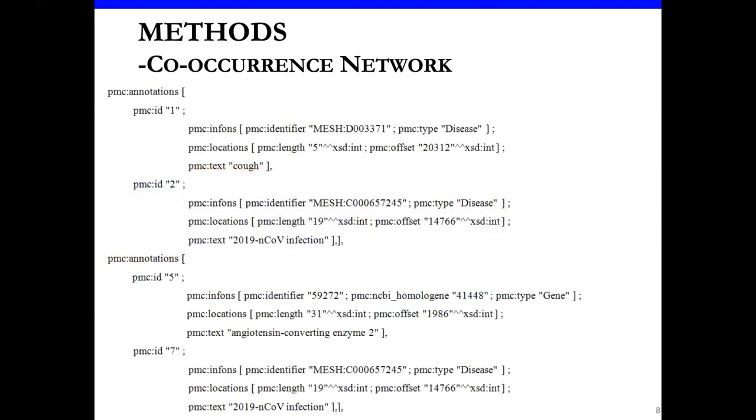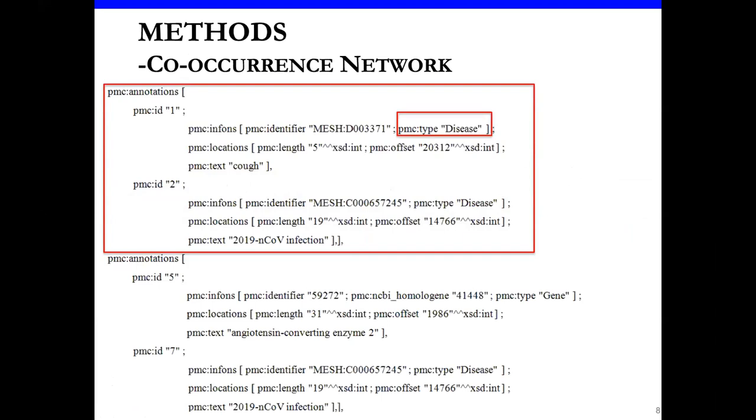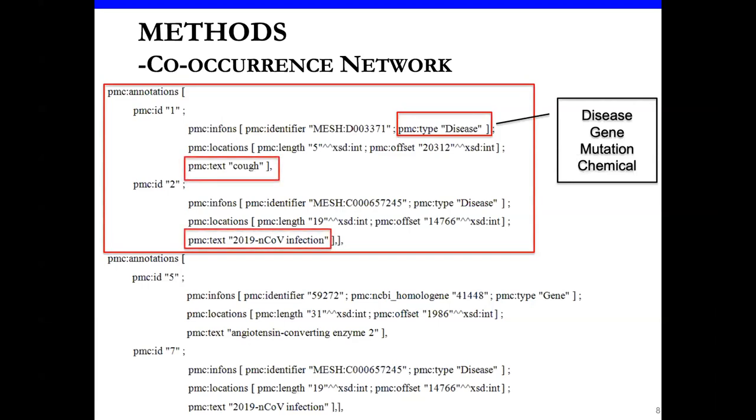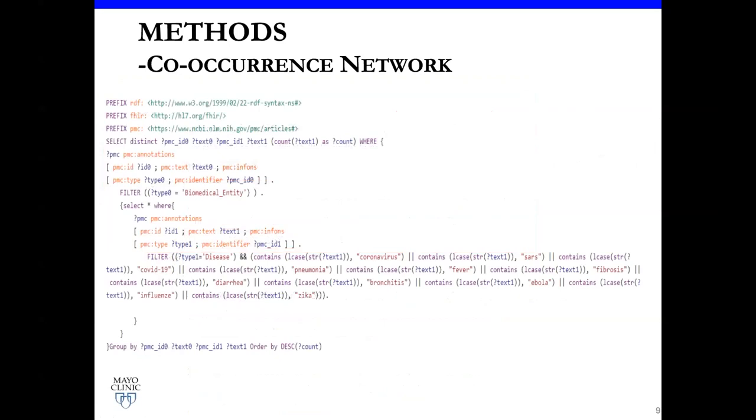From here, you can see an example of the structure of RDF turtle format in COVID-19 on FHIR. This box represents one paragraph annotated in this dataset. The type of entities are mentioned here. Specifically, in this study, we focus on four different entity types: disease, gene, mutation, and chemical. Along with different entity types, the name of each entity is also shown here. For example, cough, 2019-nCoV-infections. We leverage the structure of the turtle file and apply a SPARQL query over this RDF data to do initial extraction.